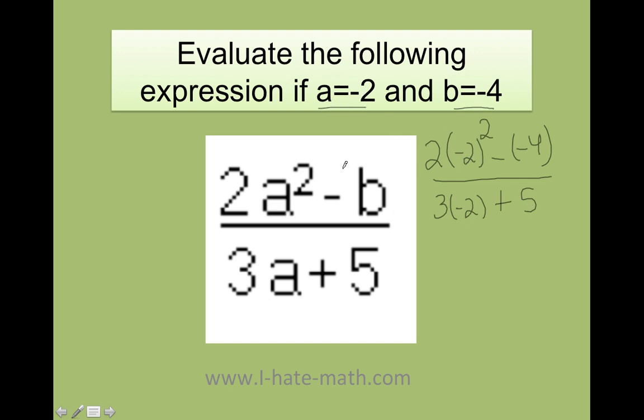All right. So let's check this. Whatever I have in a, I'm going to put a negative 2. And where I have a b, I'm putting a negative 4. So let's do it. Negative 2 times negative 2, that's going to equal 4. And then negative times negative is a positive. I'm just working my numbers. 3 times negative 2 is negative 6 plus 5. Awesome. 2 times 4 is going to be 8, which is 8 plus 4. Negative 6 plus 5 is going to be negative 1. We're almost done.